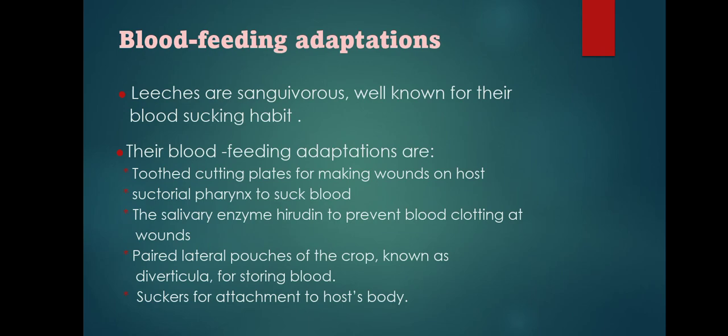The blood feeding adaptations of leeches: leeches are sanguivores well known for their blood-sucking habit. Their adaptations include toothed cutting plates for making wounds on the host, a suctorial pharynx to suck blood, the salivary enzyme hirudin to prevent blood clotting at wounds, paired lateral pouches of the crop called diverticula for storing blood, and suckers for attachment to the host body.